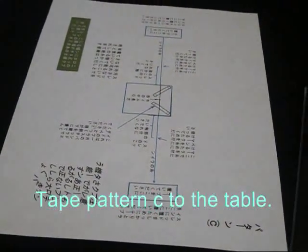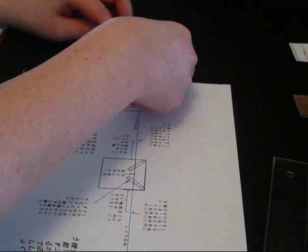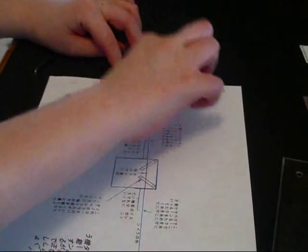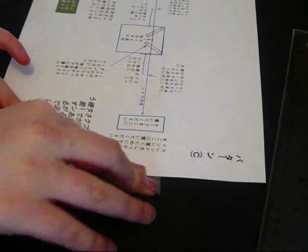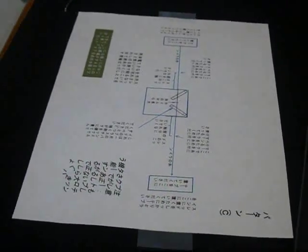Attaching the leaves. Tape pattern C to the table. Put tape on the marked spots on the pattern.